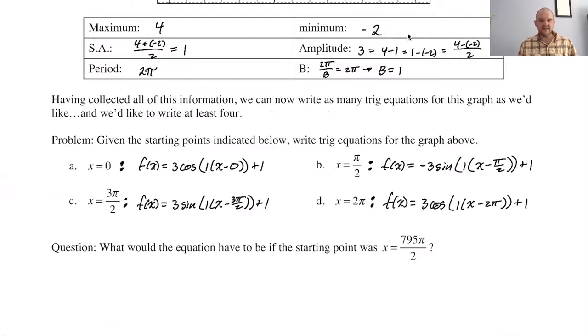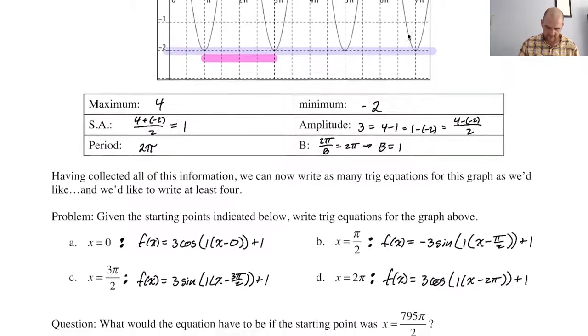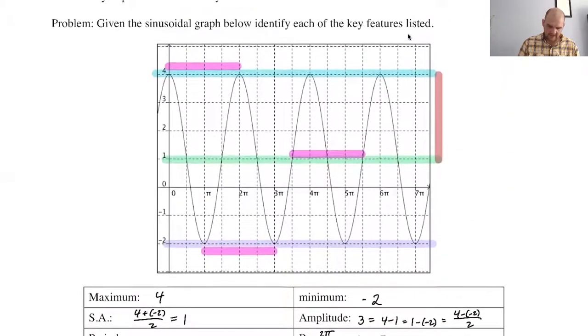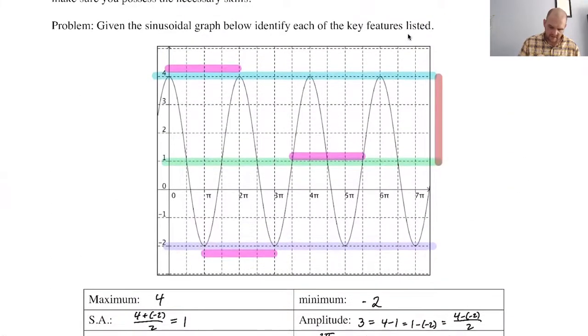Now, what would the equation have to be if the starting point was X equals 795 pi over two? We could have started at zero and we get positive cosine, pi over two and we get negative sine, pi and we get negative cosine, three pi over two gives us positive sine. Then we're just going to get co-terminal things.